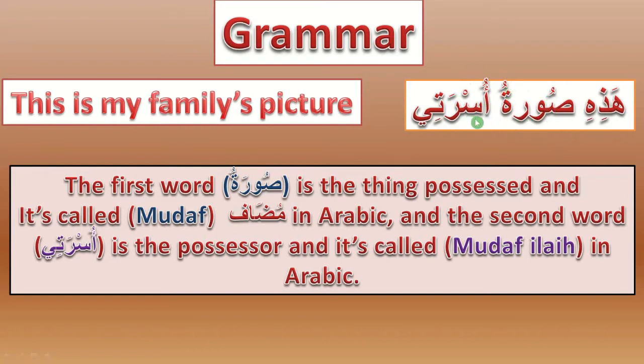Let's see now more examples. The first one: كتاب محمد — Muhammad's book. We put كتاب in the beginning and after that محمد. The second: سورة مريم — Maryam's picture. The possessed is in the beginning and the possessor after that.